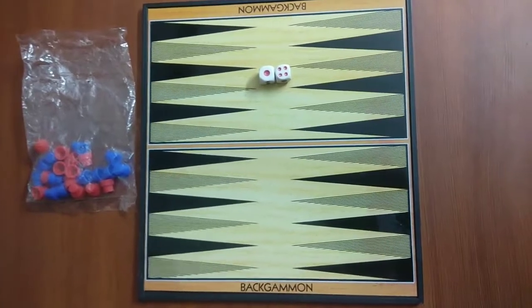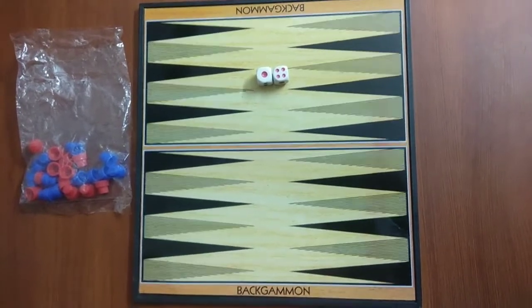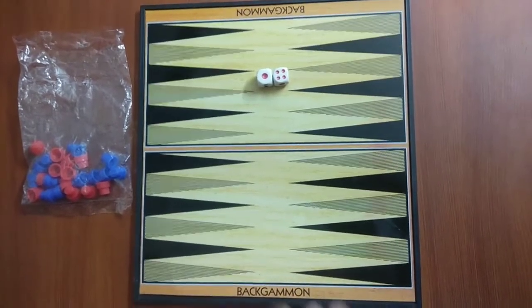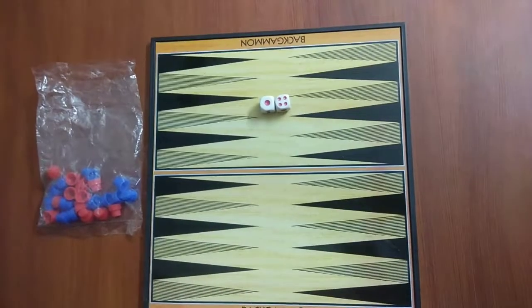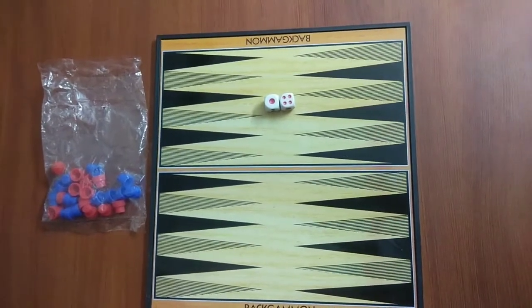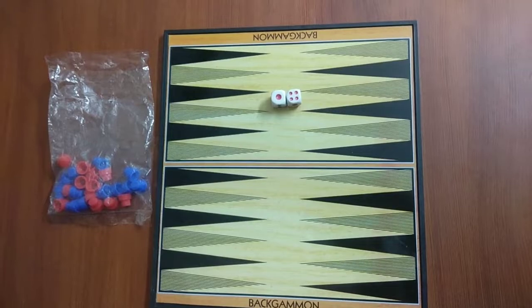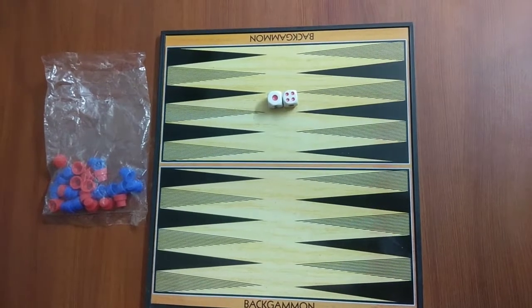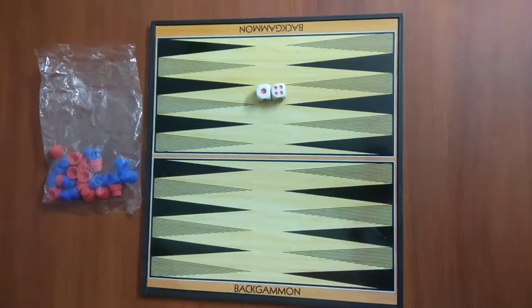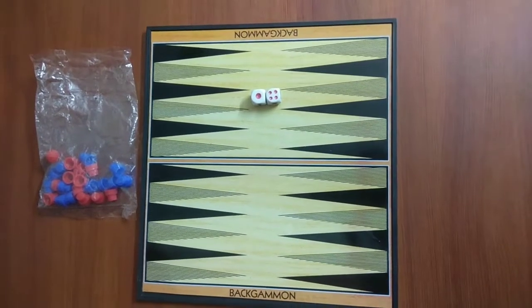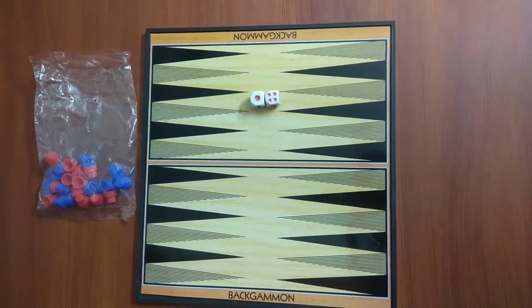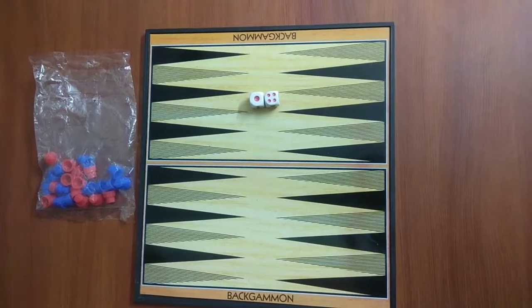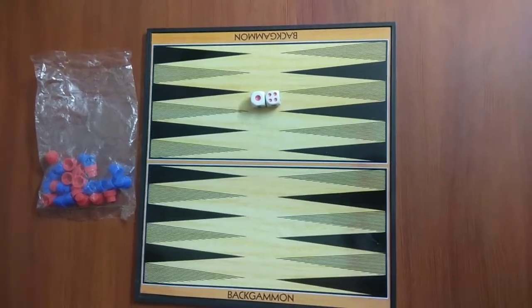Each player has to sit on opposite sides of the board. Each player has 15 colored pieces. The goal of the game is to be the first to remove all the pieces on the board.